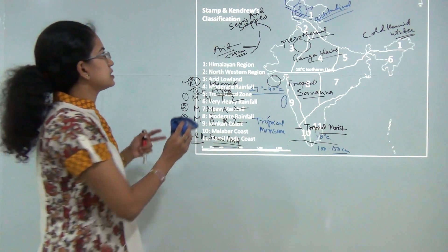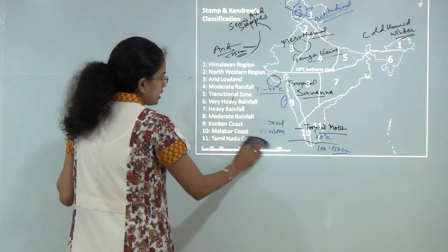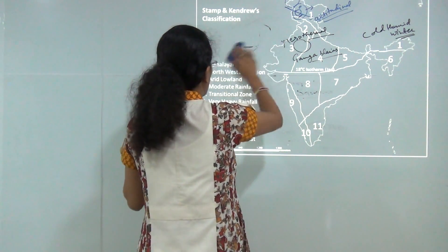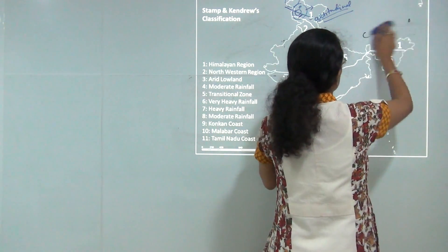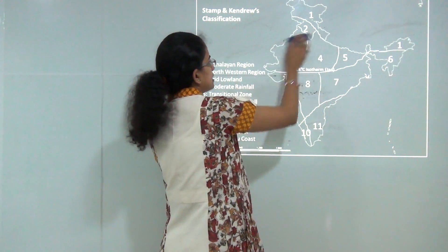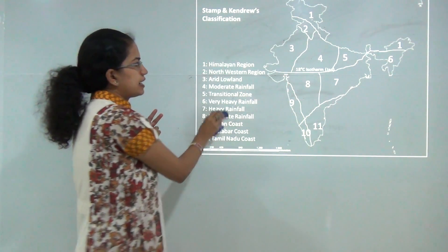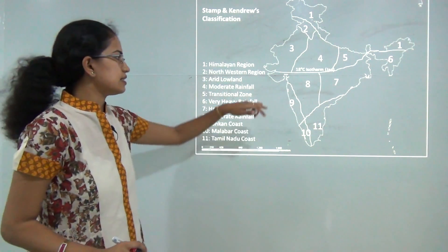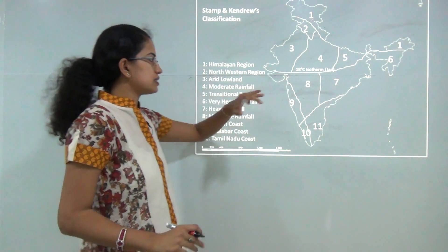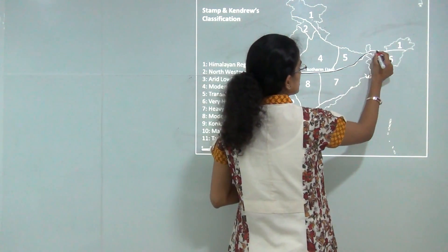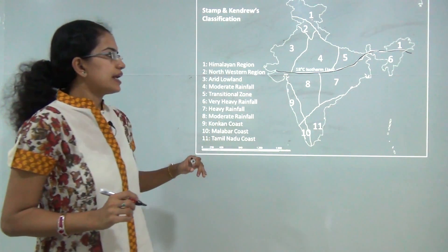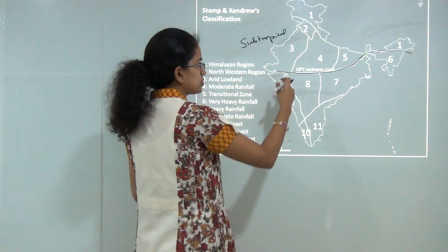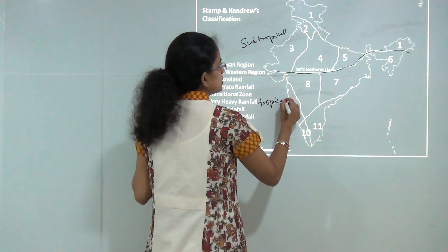The next classification was given by Stamp and Kendrew. He classified the country into 11 subdivisions and two broad divisions: the tropical region and the subtropical region. His classification was simple — he used the 18-degree isotherm as the line distinguishing subtropical from tropical regions. An isotherm is a line joining points of equal temperature; north of this line is subtropical and south is tropical.